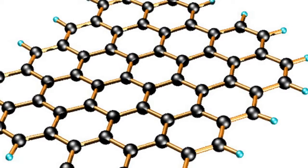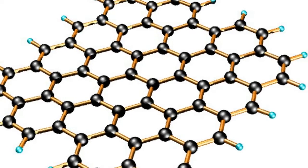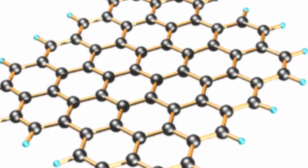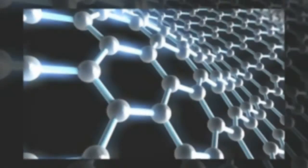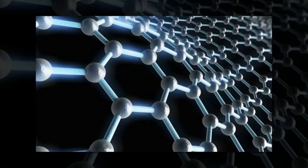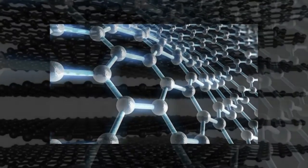Graphene is so perfect, said Northwestern Engineering's Jiaxing Huang, and graphene oxide is more defective, so it's like the weaker, less exciting version of graphene.